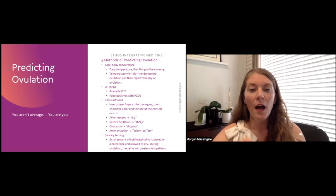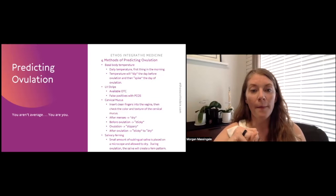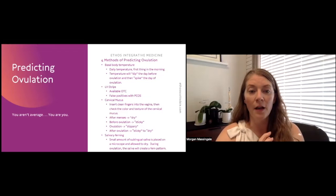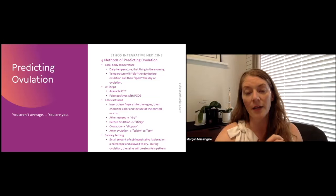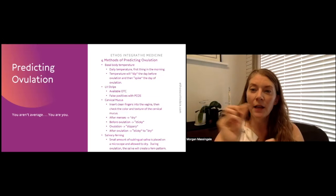Another reliable method of predicting ovulation is cervical mucus. So this is an option that some women are just not comfortable with, which is totally understandable. But you do insert two clean fingers into the vagina and then check the color and the texture of the cervical mucus by trying to spread it between your two fingers.